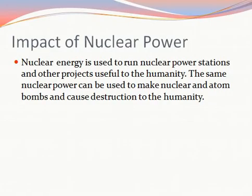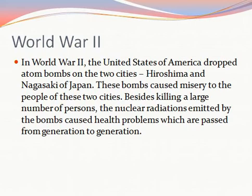Nuclear energy is used to run nuclear power stations and other projects useful to humanity. However, the same nuclear power can be used to make nuclear and atom bombs, causing destruction. In World War II, the United States dropped atom bombs on two cities — Hiroshima and Nagasaki — in Japan. These bombs caused great misery; besides killing large numbers of persons, the nuclear radiations emitted caused health problems passed from generation to generation.